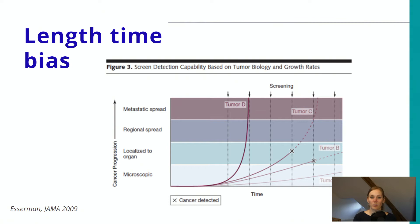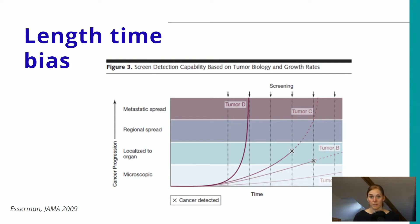Length time bias occurs in observational data where you want to study the outcome of screening. For example, if you want to compare the mortality of patients who have a screen-detected tumor with the so-called interval tumor — a tumor detected in between different screening moments — length time bias plays a large role.